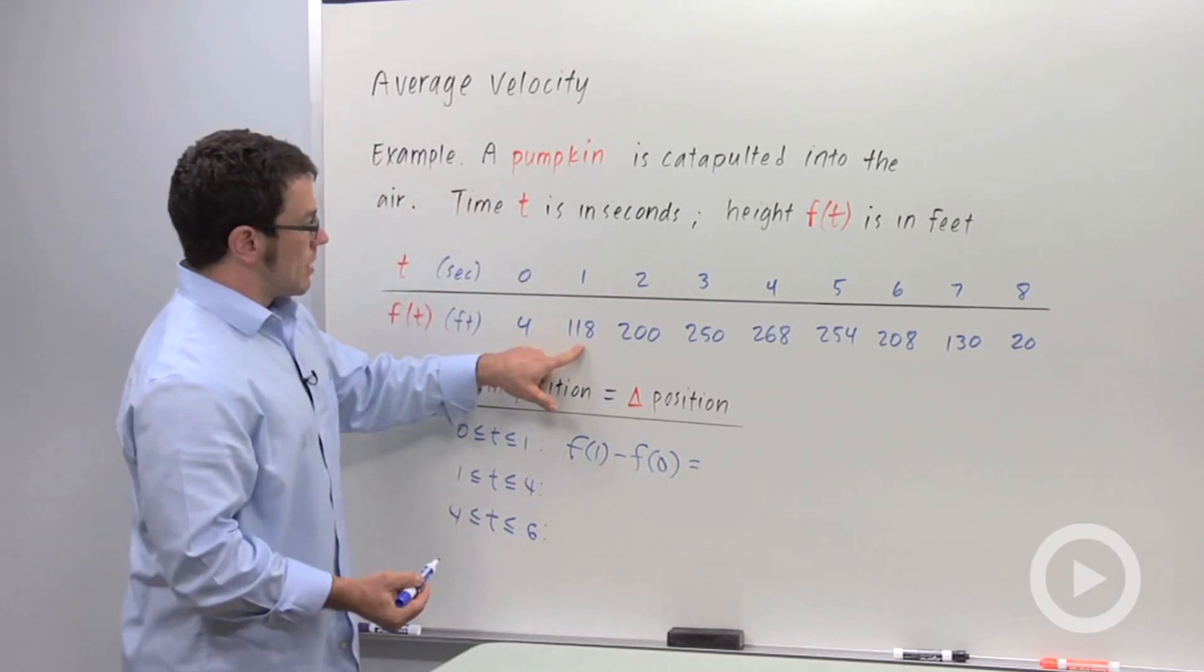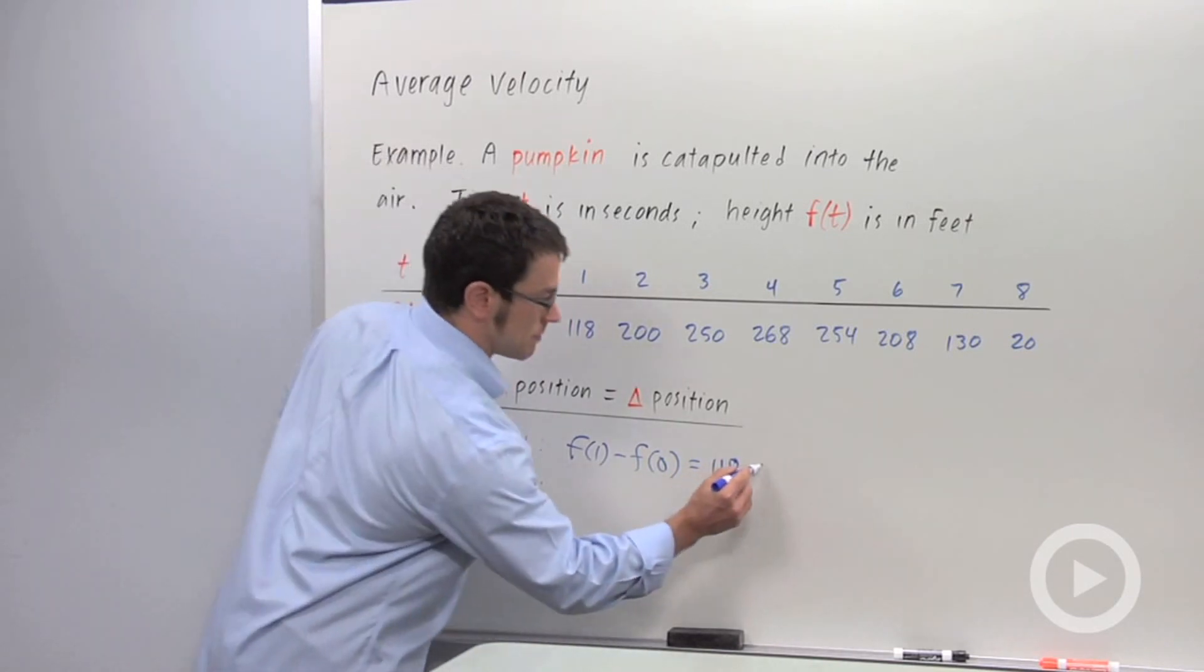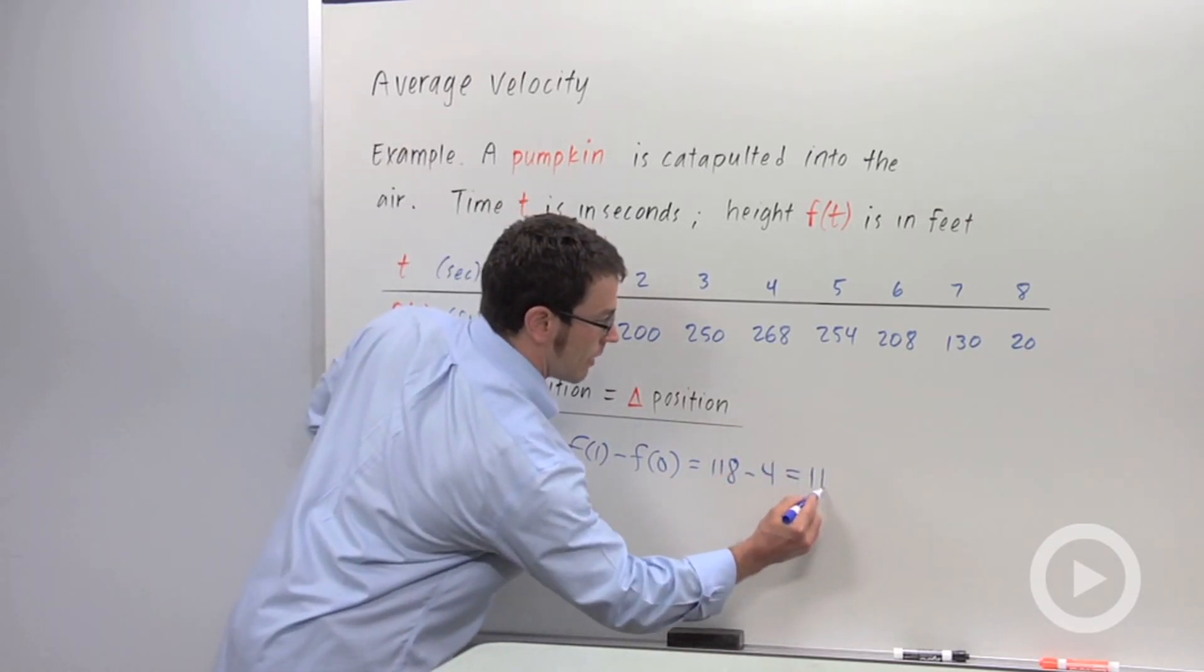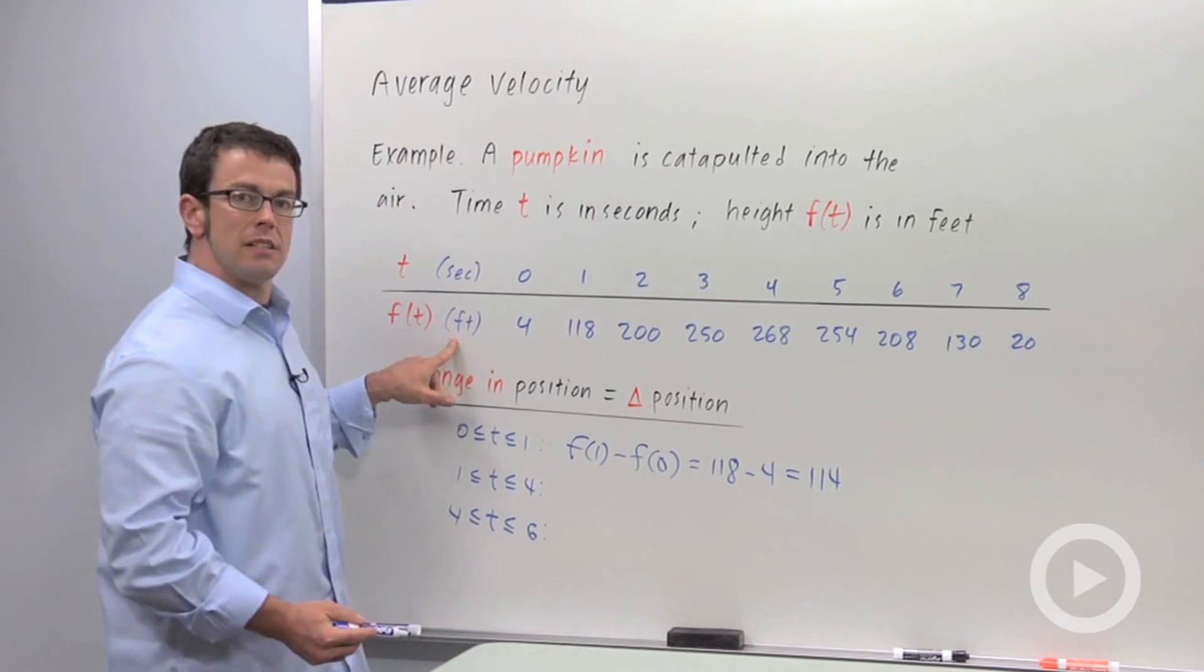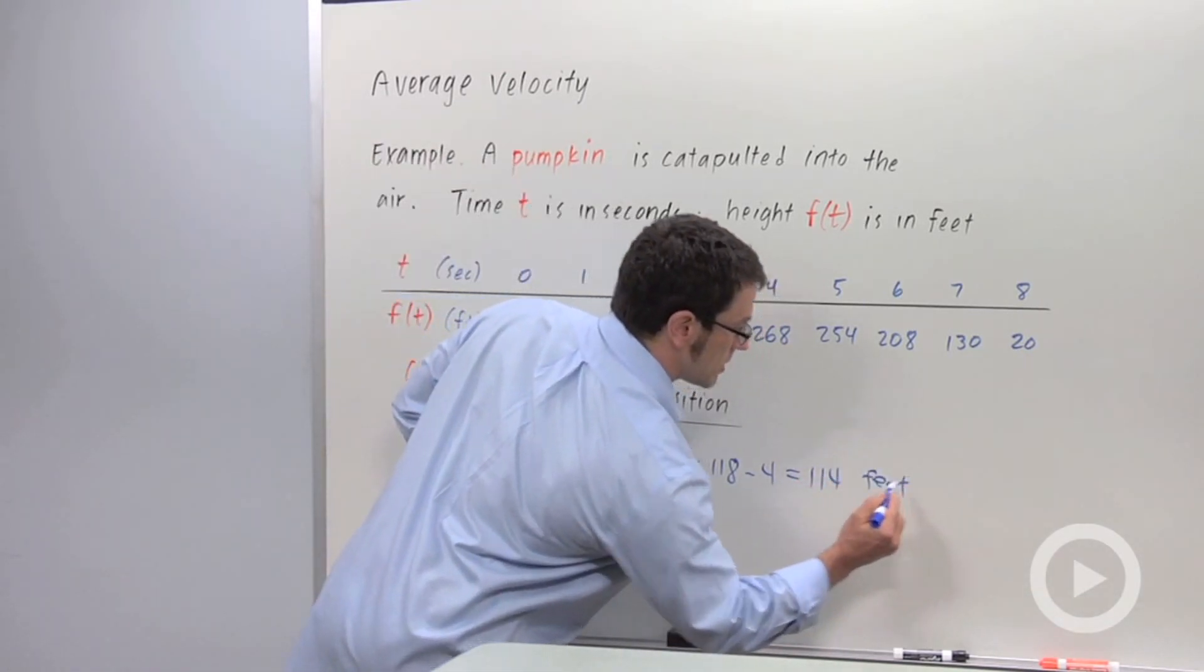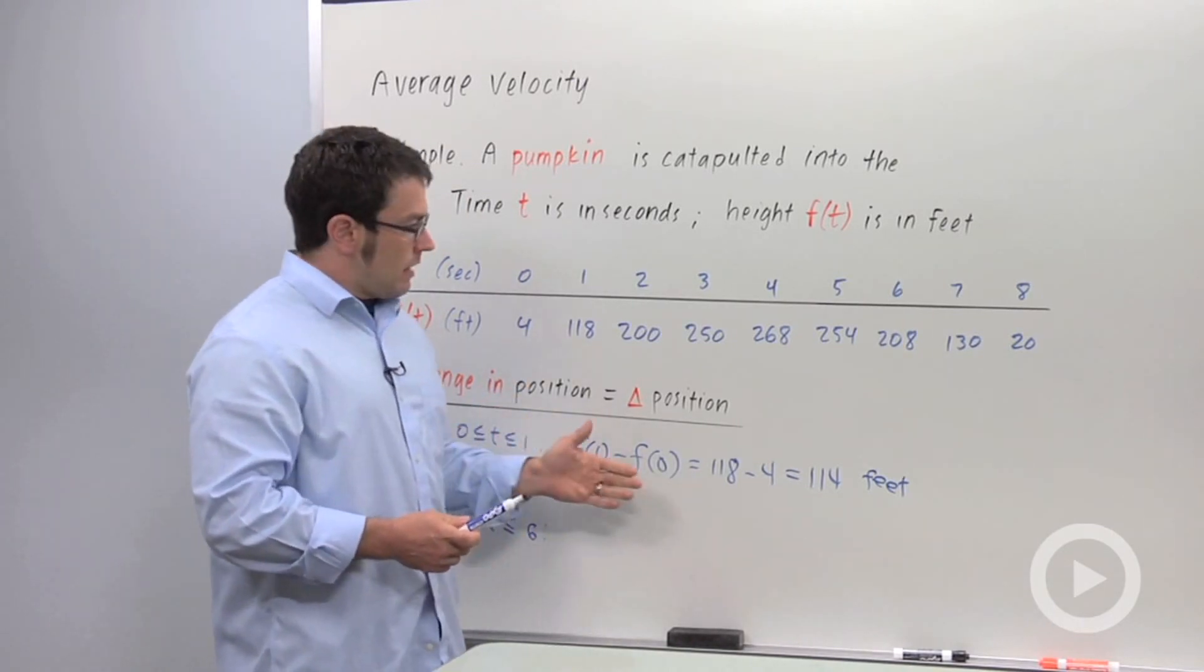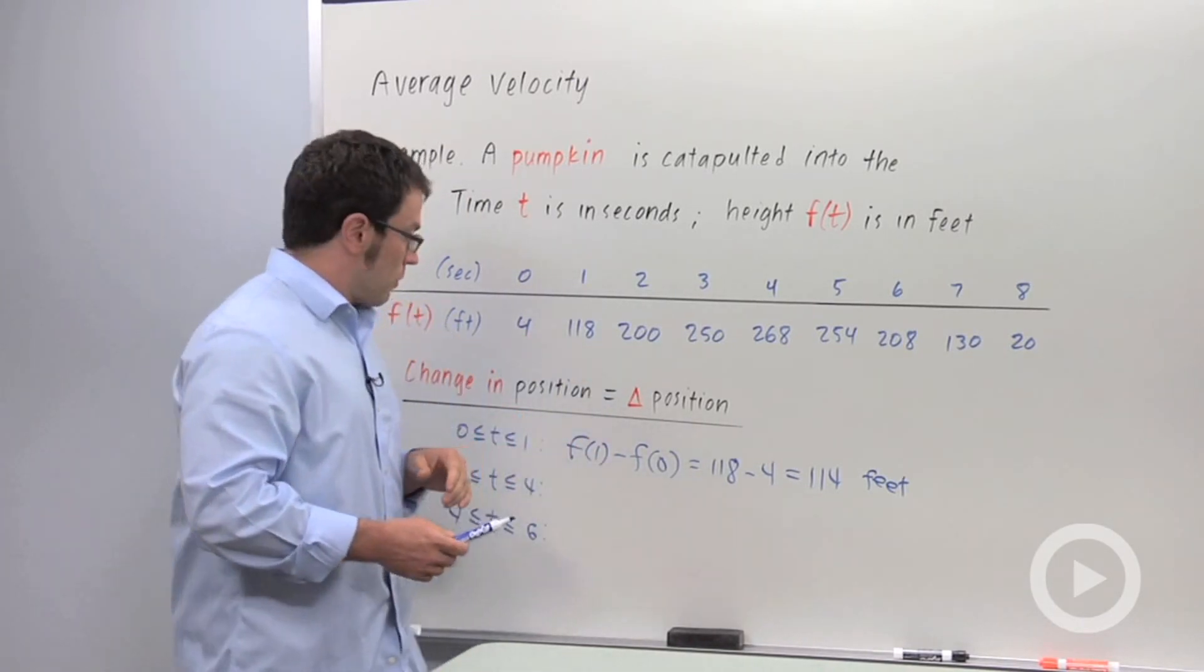Now f of 1 is 118. f of 0 is 4. And so I'd get 114. But remember, the units are feet. So this would be in feet. That means that the pumpkin over that first second increases in height 114 feet.